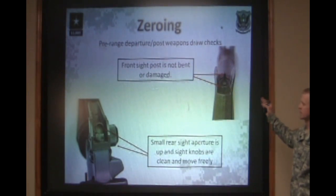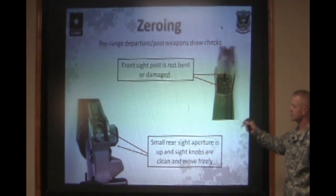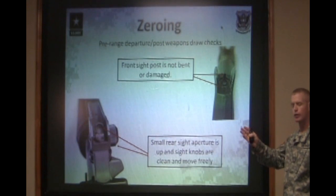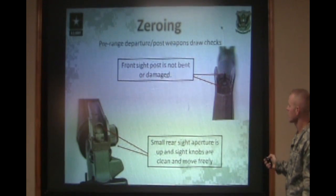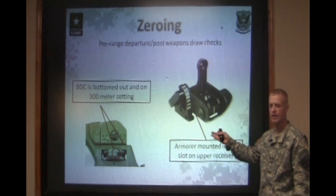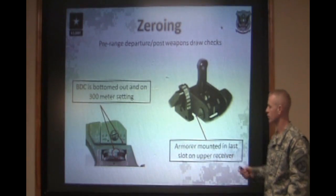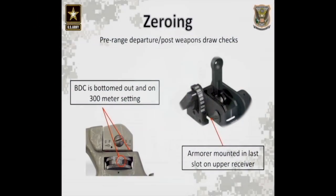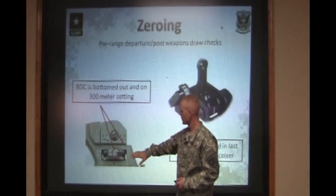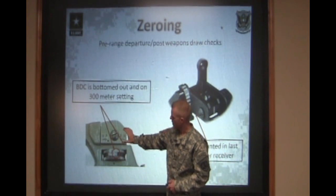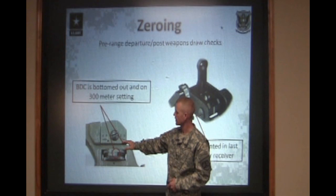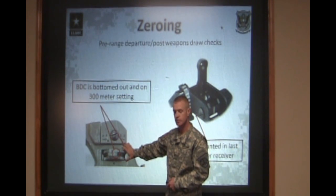Now moving to the rear sight — make sure that the rear sight aperture, the small aperture, is up, centered in the rear sight housing, and that it moves freely and is clean, not dirty or caked with debris. Once we've confirmed the front sight post is not damaged and the rear sight moves freely through its entire range of travel and is centered up, we need to check and make sure the elevation wheel is in the correct position. To zero at 25 meters, ensure that the elevation wheel is set at 8-3 and there's no gap between the rear sight and the carrying handle.